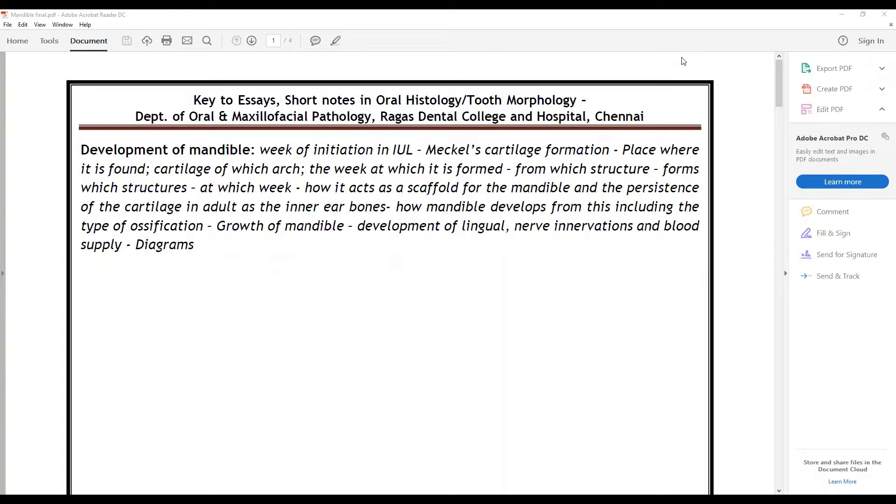The exact week of the initiation of the mandible in the intrauterine life, the role of Meckel's cartilage in the formation, place where it is found, cartilage of which arch, the week at which it is formed, from which structures it forms, at what week, how it acts as a scaffold for the mandible and the persistence of the cartilage in adult as the inner bones. How mandible develops from this, including the types of ossification, growth of mandible, development of lingual nerve innervation and blood supply, along with diagrams.